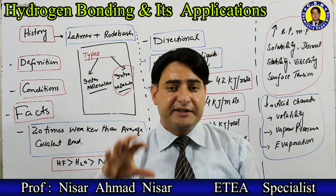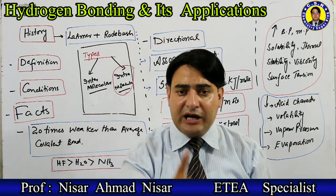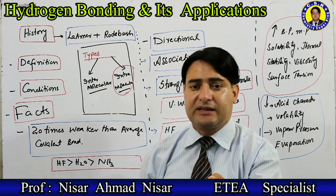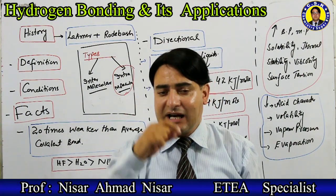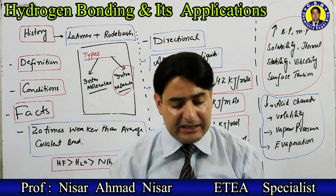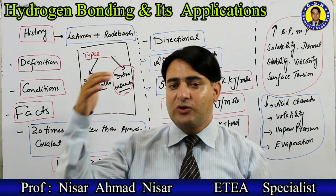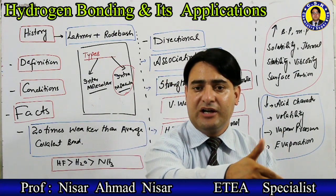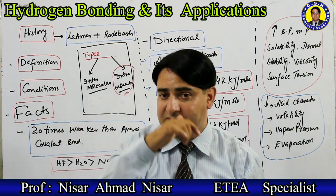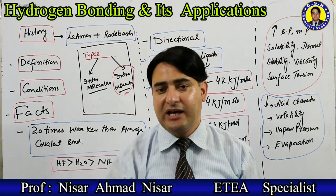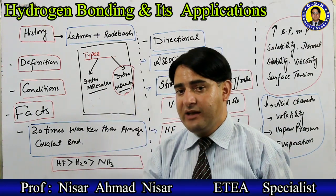In HCl, chlorine's electronegativity is comparable to nitrogen's, and chlorine also has lone pairs of electrons. However, chlorine cannot form hydrogen bonding because its size is large. Even though chlorine's electronegativity is comparable to nitrogen, it cannot form hydrogen bonding due to its large atomic size. So the two basic conditions for hydrogen bonding are: hydrogen must be attached to a highly electronegative atom, and the electronegative atom must be small in size with lone pairs of electrons.